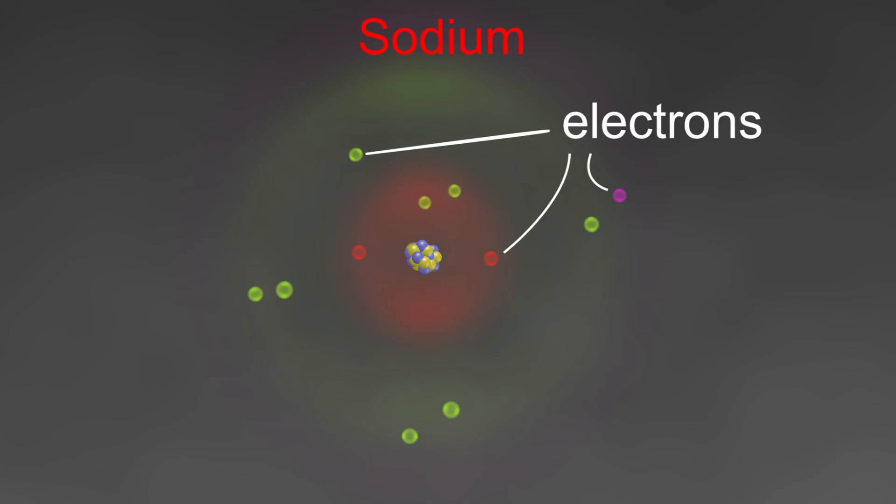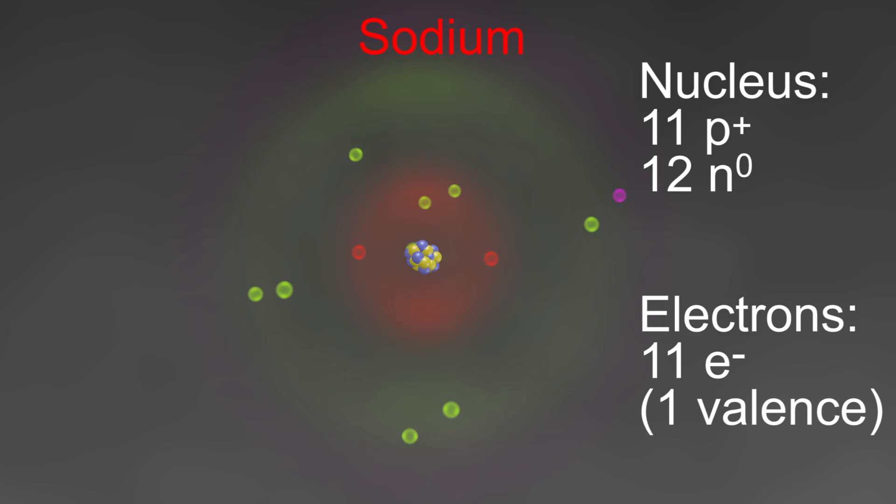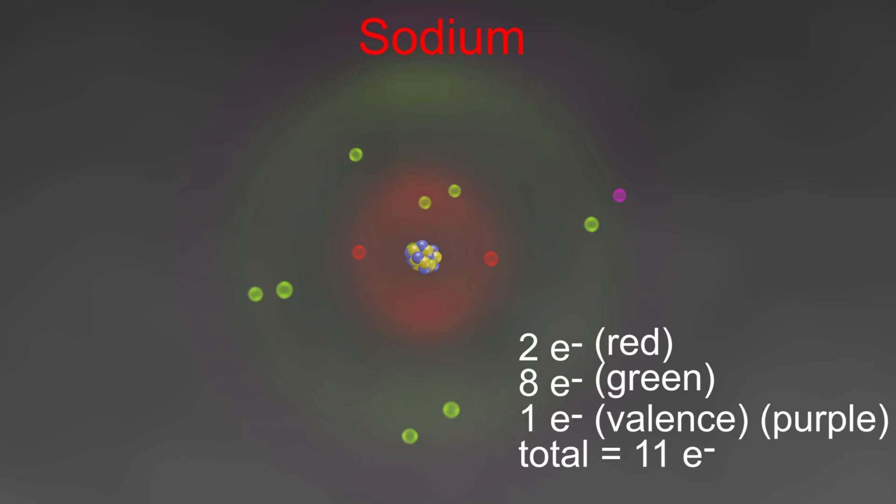We've got a nucleus with 11 protons and 12 neutrons, and we have a total of 11 electrons flying around the outside: two in the inner shell, eight in the next level.